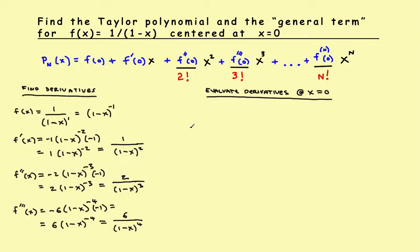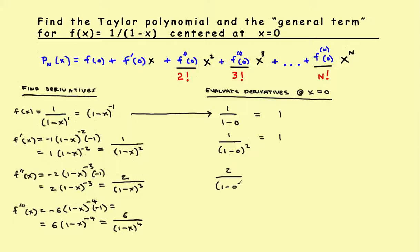Now, just like in the previous videos, we evaluate each derivative at x equals 0. For the original function: 1 divided by (1 minus 0) gives 1. For the first derivative: 1 divided by (1 minus 0) squared also gives 1. For the second derivative: 2 divided by (1 minus 0) cubed — the denominator becomes 1, so that gives 2. And for the third derivative: 6 divided by (1 minus 0) to the 4th gives 6.